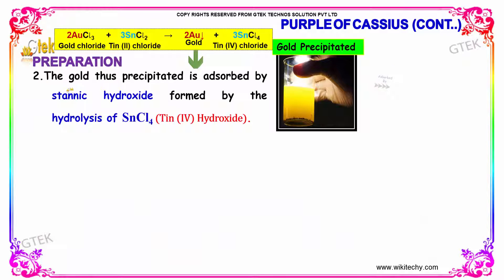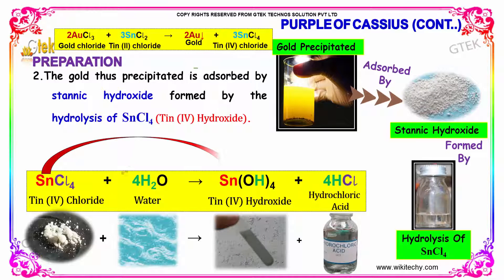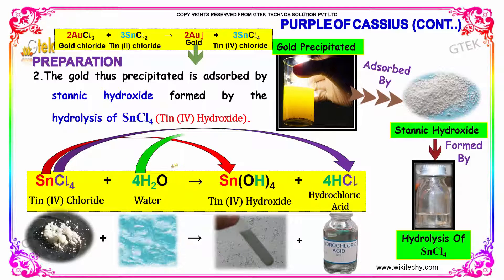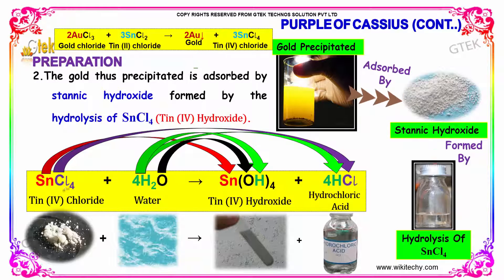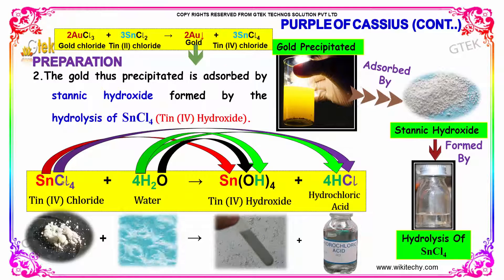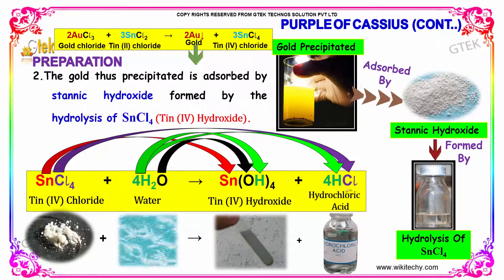The gold that precipitates is absorbed by stannic hydroxide, formed by the hydrolysis of tin hydroxide. You are able to see the tin chloride which is formed here with water — it gives the tin hydroxide, leaving the gold separately.